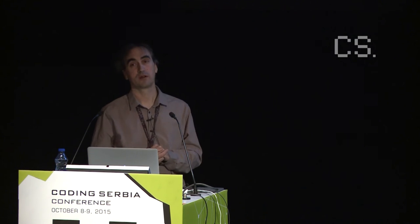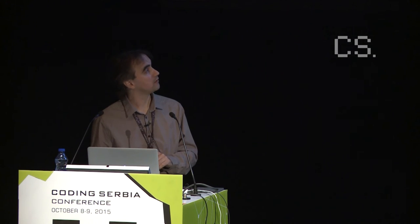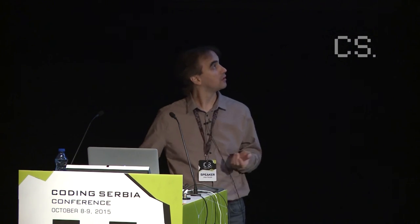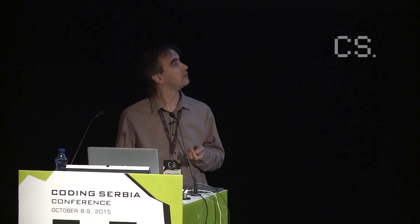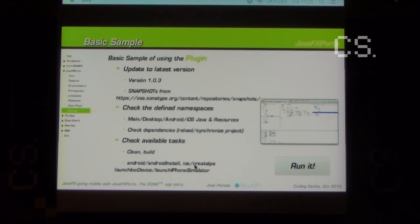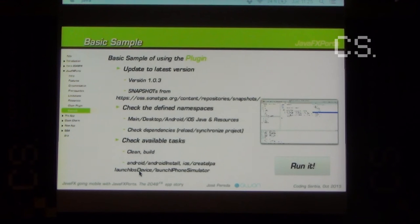The plugin will create a few Gradle tasks for us — all basically related to running on desktop, deploying directly on Android, creating an IPA for iOS, or launching directly. For instance, if you connect your iPhone to your Mac and run Gradle launch iOS device, you will see all the debug messages in your IDE while running the app on your phone. You can also use the simulator if you don't have a phone, or want to test the iPad version.